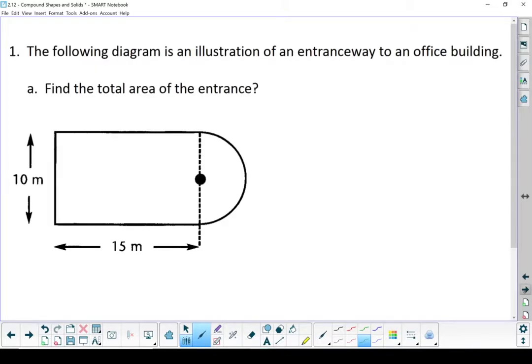First question here, we've got this shape. This is the entranceway to an office building. Got some dimensions. Question asked, find the total area of the entrance. When we look at this, we're going to break it down into two parts. First part is going to be a rectangle, and the other part is going to be this half circle.